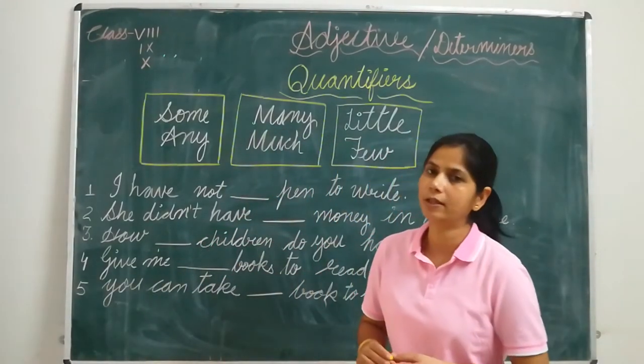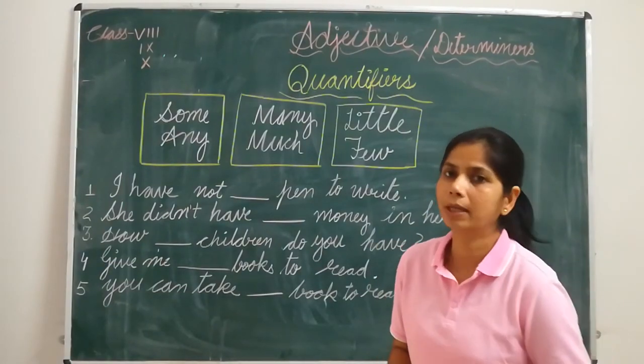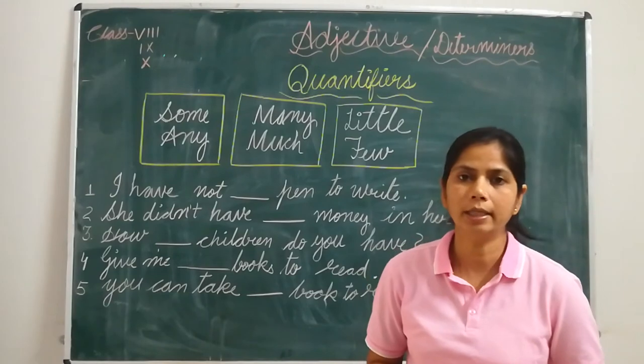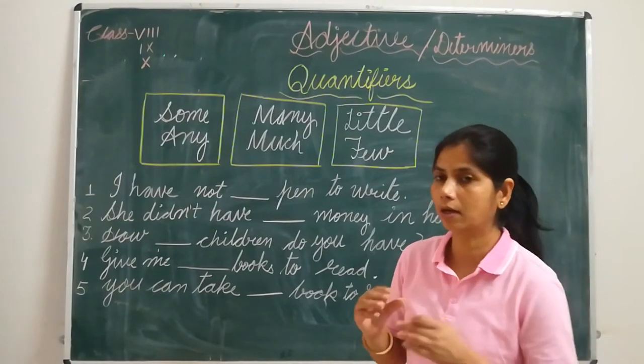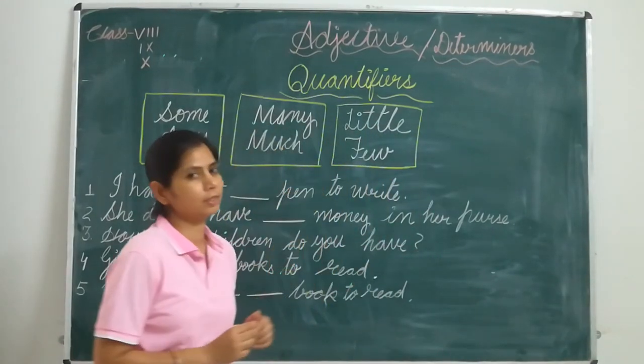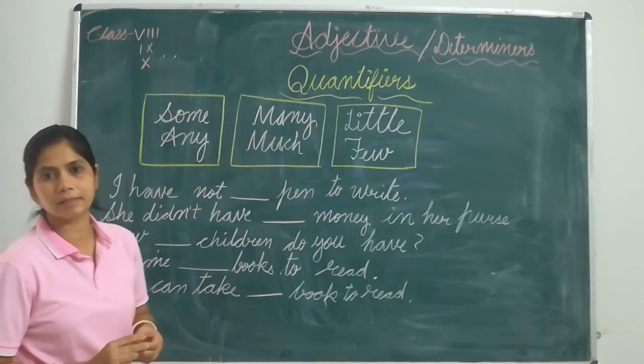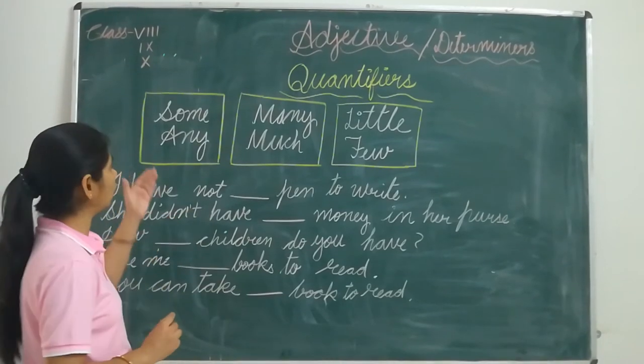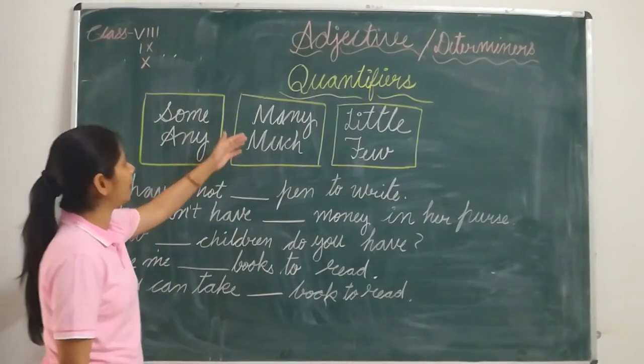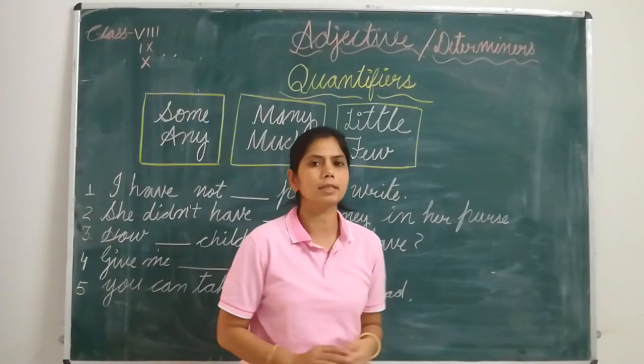There are many types of adjectives and determinants, but today I have picked quantifiers. Sometimes students face difficulty in the use of these quantifiers, so we will discuss the different uses of these quantifiers. Some, any, many, much, little, few—all these are quantifiers.